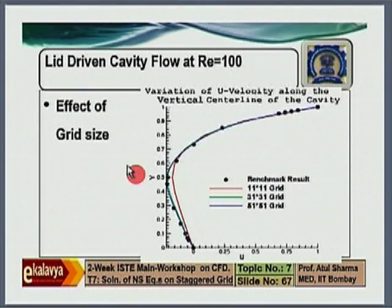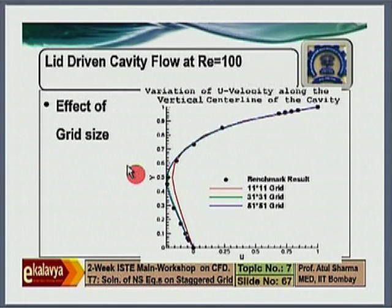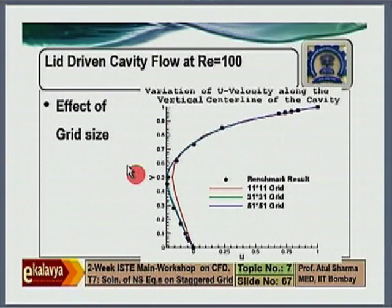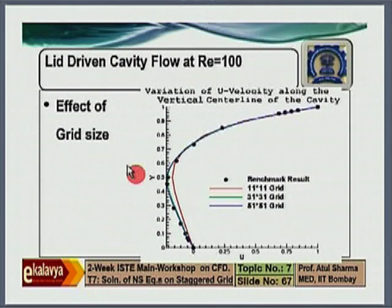This is the figure showing the results. Using all the details discussed earlier, the code is developed and run on three different grid sizes. Here, the variation of u velocity on the vertical center line is shown. You can see on the bottom half u is negative and on the top half u is positive, as expected. The red line represents results obtained on an 11×11 grid, the green line on a 31×31 grid, and the blue line on a 51×51 grid.